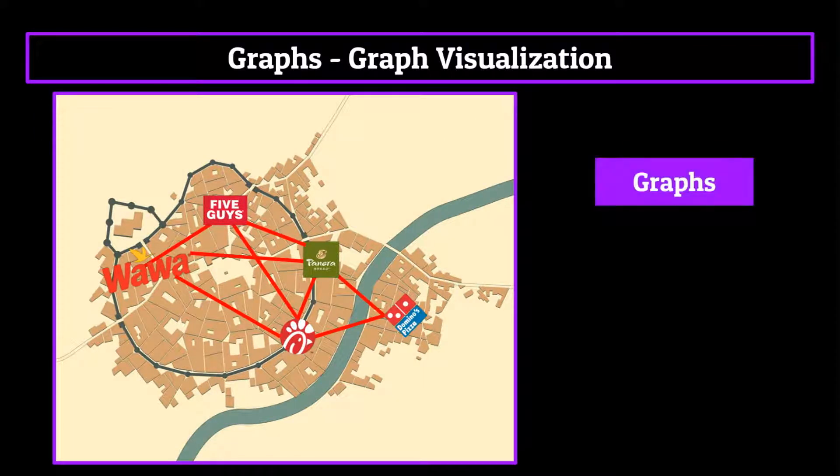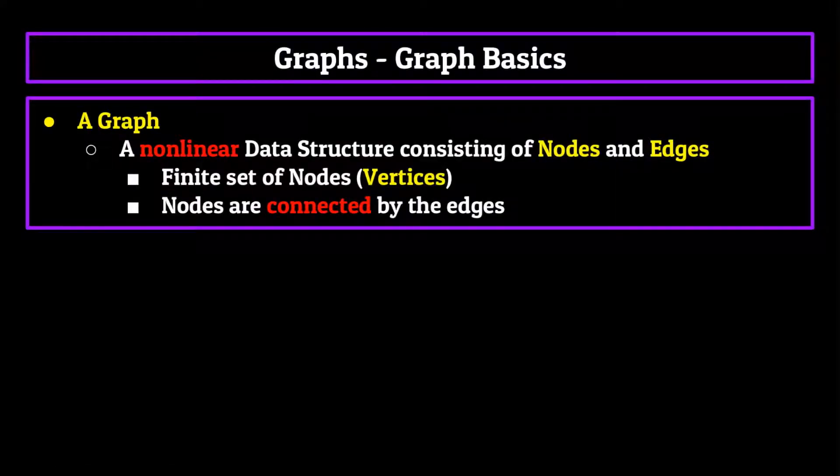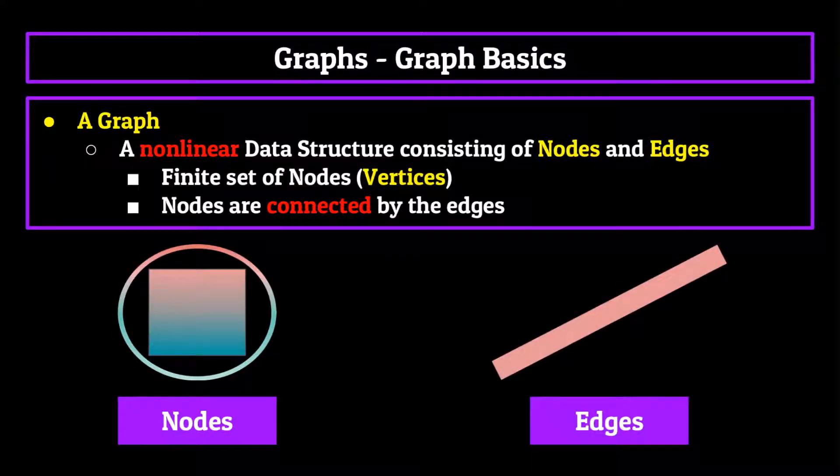Essentially, graphs are composed of pieces of information and the paths that run between them. More specifically, by definition, they are a nonlinear data structure consisting of nodes and edges. There are a finite set of these nodes, also called vertices, which are connected by the edges.